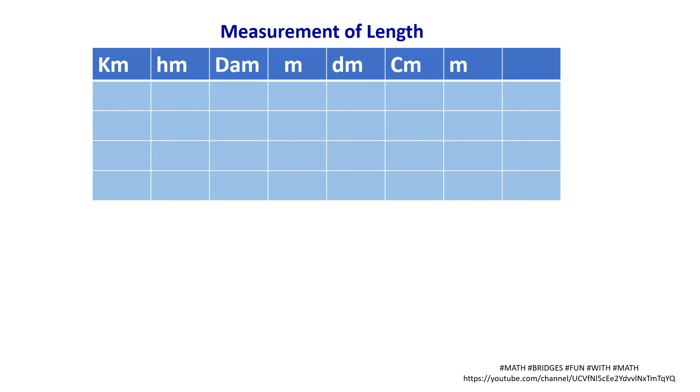Let's consider one example for the conversions. I have taken measurement of length. So you recall the secret about King Henry. King Henry does not usually - usually is the basic unit. Basic unit of length is meter. So I have taken meter here. Drink, chocolate, milk.